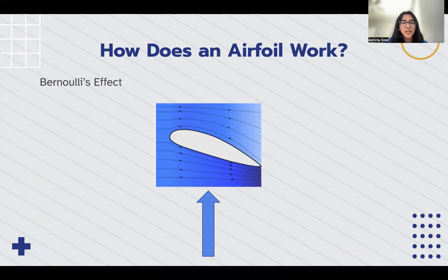In this case, the air from the bottom of the wing tries to move upwards and therefore moves the wing and the whole aircraft upwards. This is called Bernoulli's effect.